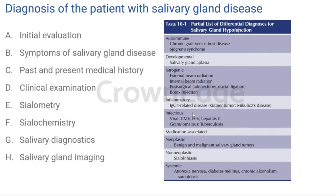A thorough examination is essential. We need to quantify unstimulated and stimulated salivary flow to establish salivary hypofunction. Since there are multiple causes of xerostomia and salivary gland dysfunction, a systemic approach is very important — and that's why initial evaluation and a thorough medical history are so critical.